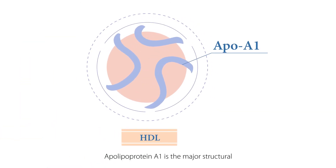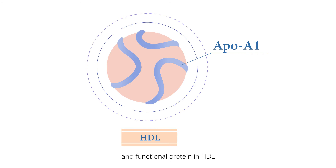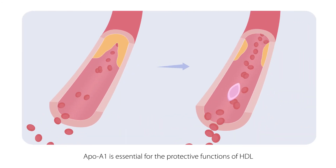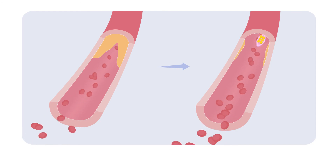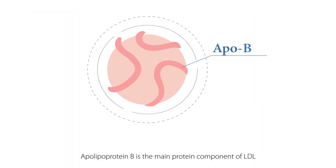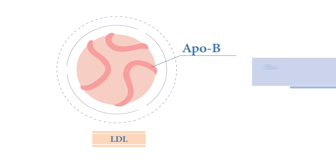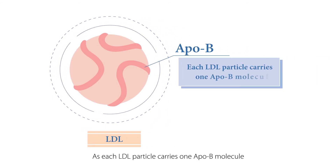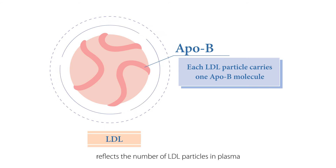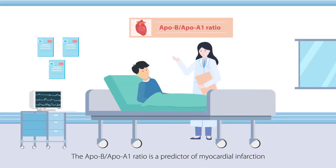Apolipoprotein A1 is the major structural and functional protein in HDL, and is essential for the cardioprotective functions of HDL. Apolipoprotein B is the main protein component of LDL. As each LDL particle carries one ApoB molecule, the plasma level of ApoB reflects the number of LDL particles in plasma. The ApoB-to-ApoA1 ratio is a predictor of myocardial infarction.